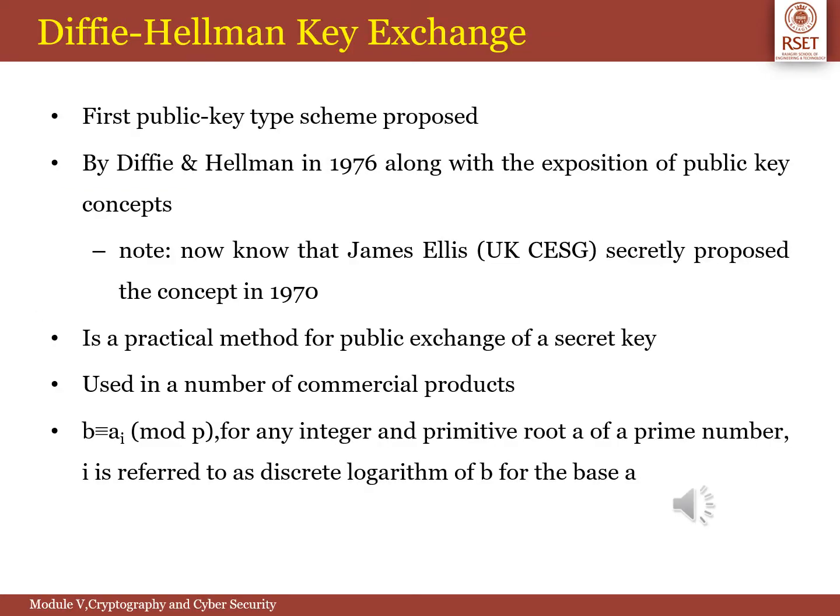As we have already seen in Part 1 of Module 5, there are three main applications for a public key crypto system. The first application is encryption and decryption of the message — we have already seen that RSA can be used for this. The second application is key exchange, and the third is generation of a digital signature. RSA can also be used for key exchange and digital signatures. Here we are going to define an algorithm called Diffie-Hellman Key Exchange, which is exclusively used for key exchange.